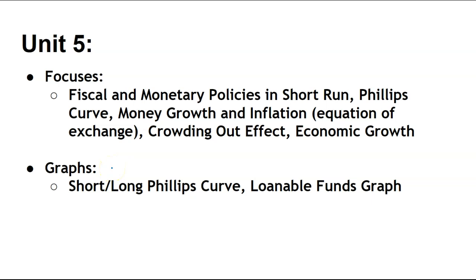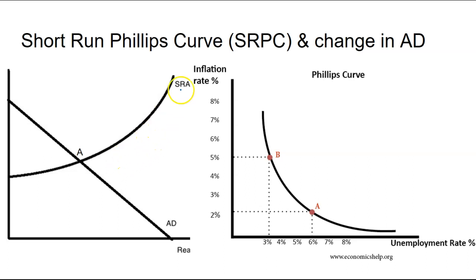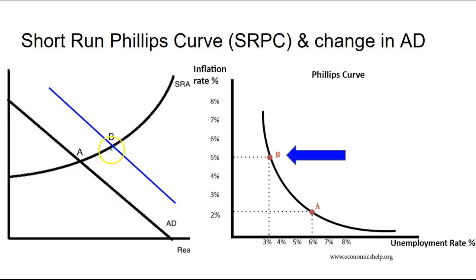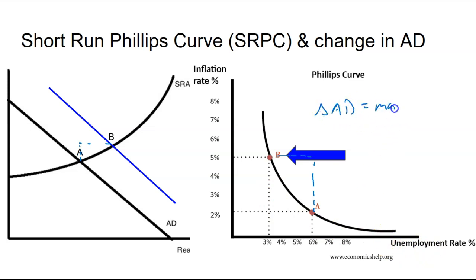Unit 5 covers fiscal and monetary policies, short-run Phillips curve, money growth, and crowding out. For the short-run Phillips curve, we have inflation on the y-axis and unemployment on the x-axis. It's an observation piece of the ASAD — here's point A, the original equilibrium. A change in aggregate demand moves along the Phillips curve. Inflation goes up, real output increases, and there's an inverse relationship — a decrease in unemployment. So a change in aggregate demand is a movement along the Phillips curve.